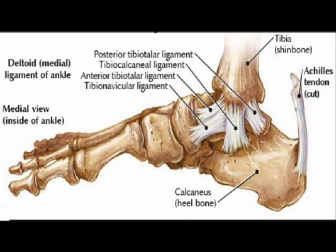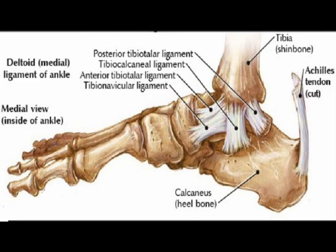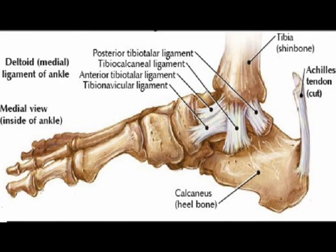Again, there are four ligaments that make up the deltoid ligament in the medial aspect of the ankle, and they help to prevent an excessive amount of eversion.